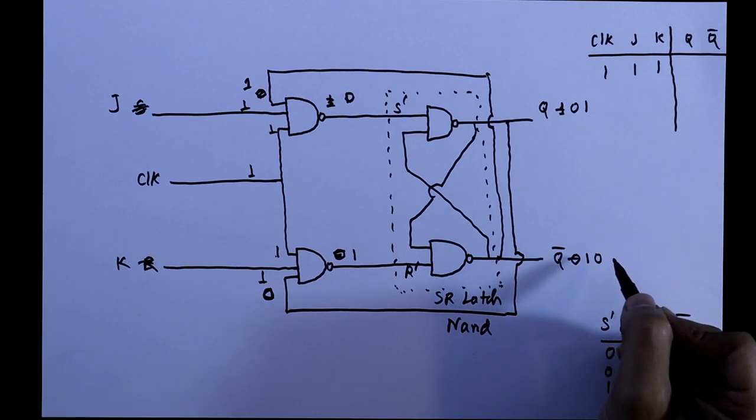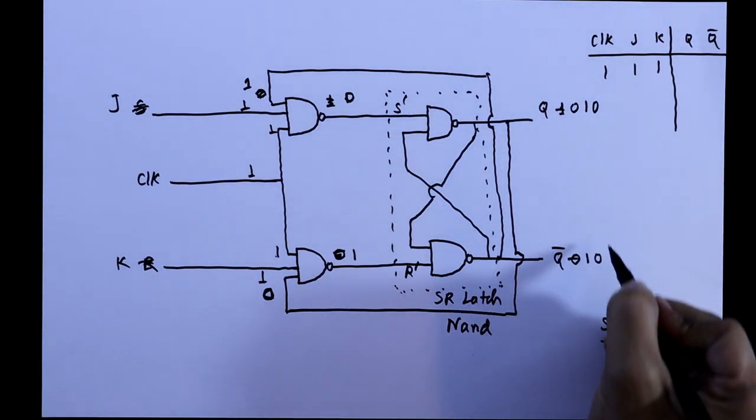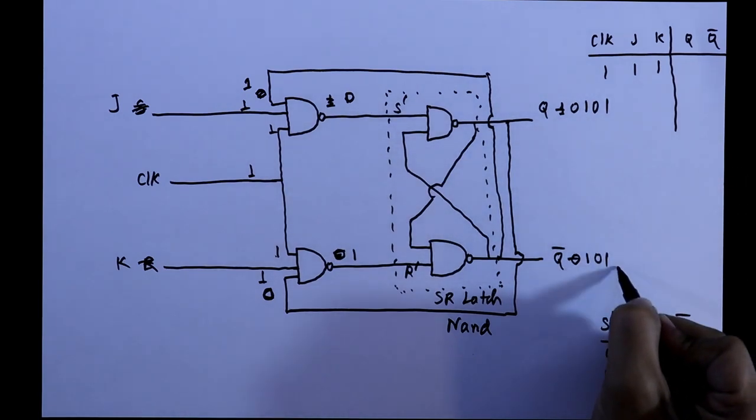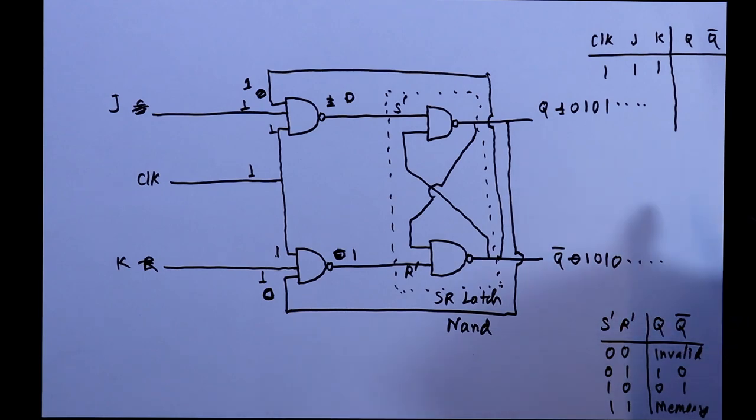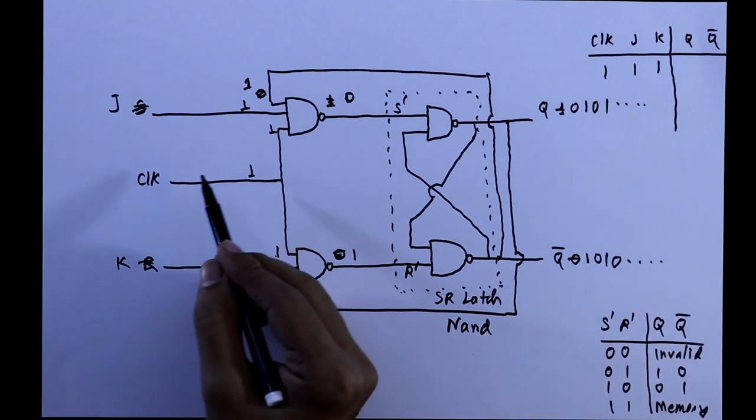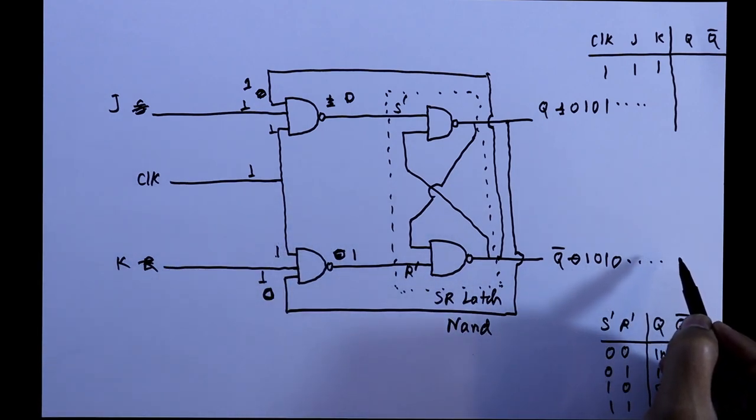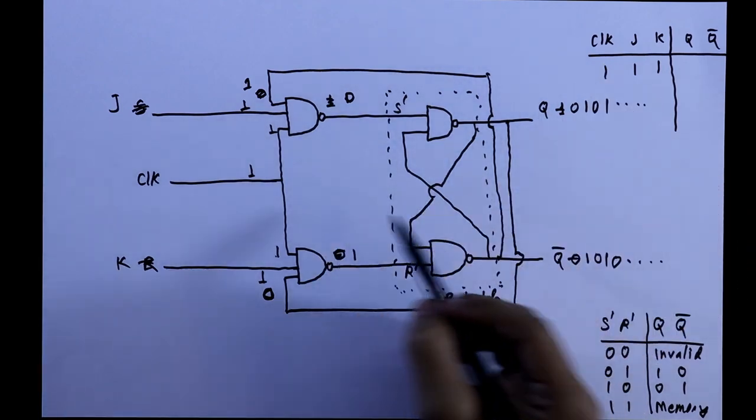Again it will change. Again we will get 0, 1 and again 1, 0. So again it will change and it goes on like this. And we call this thing as racing. And it is very important when clock is 1 then only it is possible to get the racing. Otherwise we will not get the racing.